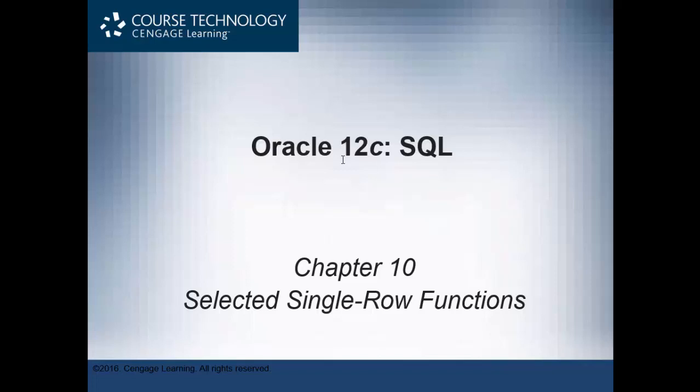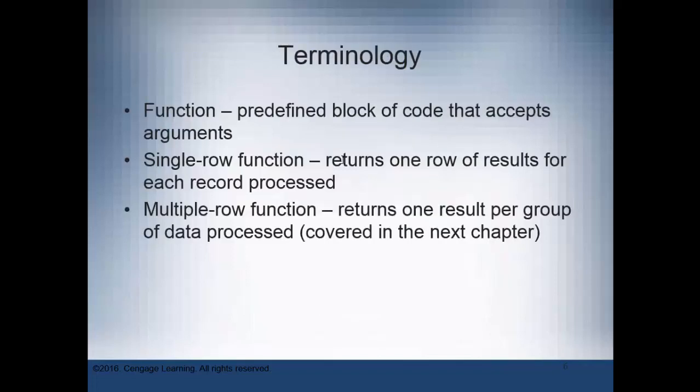Chapter 10 discusses single row functions. A function is a predefined block of code that accepts arguments. Remember, arguments are the term used for data. So we pass data to a function, the function processes that data, and returns some result.